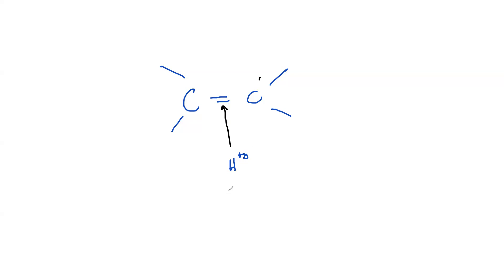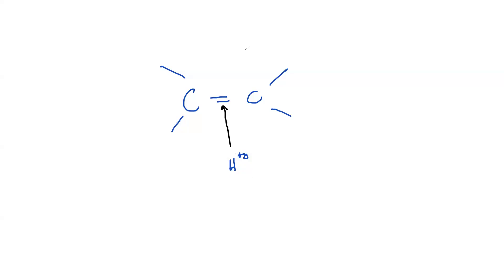Hydrogen is an electrophile. An electrophile is attracted towards the electron-rich side, so that arrow was not right. The electrons start at the carbon–carbon double bond and will try to form a bond with hydrogen, so I should draw the arrow from the electron-rich double bond to the electron-deficient hydrogen.